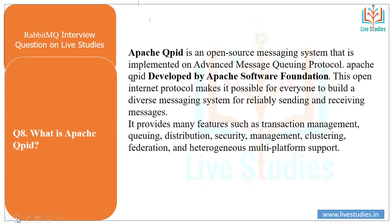Another question: what is Apache QPID? Apache QPID is an open-source messaging system that implements the Advanced Message Queuing Protocol. It was developed by the Apache Software Foundation. This open internet protocol makes it possible for everyone to build diverse messaging systems for reliable sending and receiving of messages. It provides many features such as transaction support, queuing, distribution, security, clustering, federation, and heterogeneous multi-platform support.